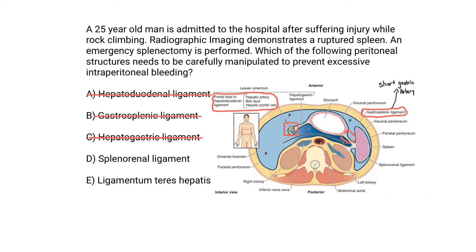Our best answer here is the splenorenal ligament. The splenorenal ligament contains the splenic artery as it enters into the hilum of the spleen, and it also contains the tail of the pancreas. Be comfortable with the structures found in each of these ligaments.